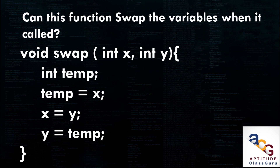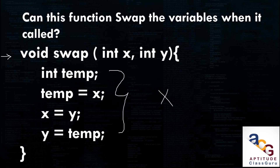Can this function swap the variables when called? The function is defined as void swap(int x, int y) with a swap operation inside. This function uses pass by value. In order to swap two variables, we must use pass by reference. Since the function passes values not addresses (no pointer parameters like int *x, int *y), this function cannot swap two variables.